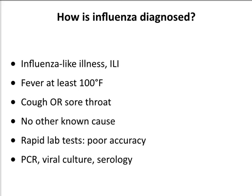To diagnose influenza, criteria called influenza-like illness (ILI) are used: fever of at least 100 degrees, cough or sore throat, and no other known causes. If you show up in flu season with these symptoms, the physician will assume influenza and may give you an antiviral. They do have rapid lab tests — respiratory swabs with dipstick-type tests — but they're poorly accurate and most physicians won't use them. You can do PCR, culture, or serology, but that takes too long. By the time you did all that, your infection would be waning. Diagnosis is pretty much by simple symptoms in the right time of year.